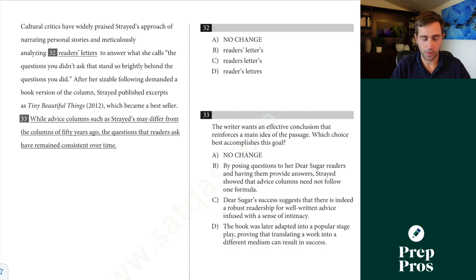All right, another apostrophe question. Cultural critics have widely praised Strayed's approach of narrating personal stories and meticulously analyzing readers' letters. So with these, I always start by eliminating easy ones. Letters are not showing possession of two, so I get rid of both of those. Now, this is the thing the SAT loves, singular versus plural possession. Plural readers, plural letters. This would be like saying one reader's letters, but we know we're talking about not one single reader, but we're talking about readers as a large group. That's why it has to be A here.